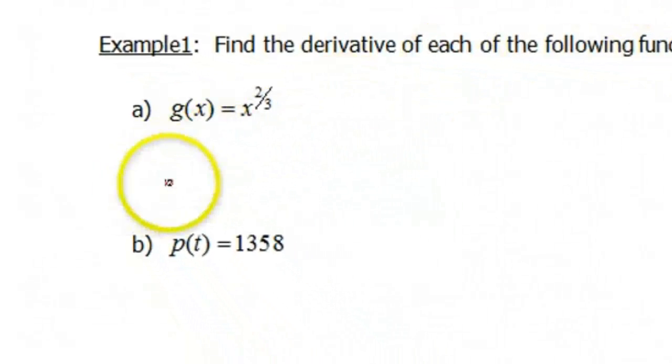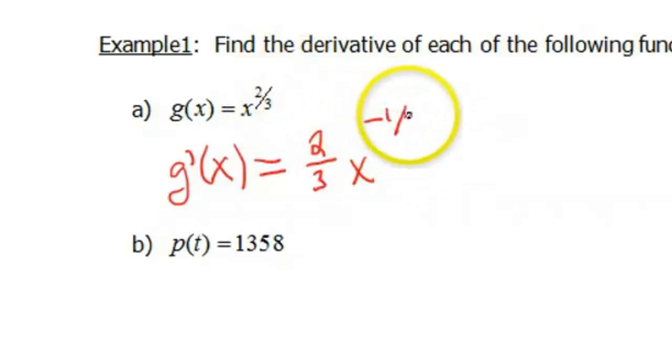So the notation for this one would be g'(x) is gonna equal - we already have this written as a power, x to the n. In this case n is 2/3. So I'm gonna drop that 2/3 out front, x to the - then the power rule says you subtract 1. So 2/3 minus 1 is gonna give us negative 1/3.